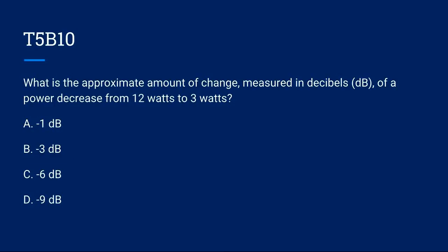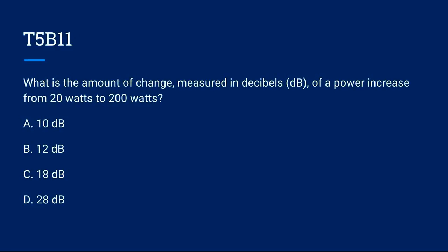T5B10, what is the approximate amount of change measured in decibels of a power decrease from 12 watts to 3 watts? A. Negative 1 decibel. B. Negative 3 decibel. C. Negative 6 decibel. Or D. Negative 9 decibel. The correct answer is C. Negative 6 decibel. T5B11, what is the amount of change measured in decibels of a power increase from 20 watts to 200 watts? A. 10 decibel. B. 12 decibel. C. 18 decibel. Or D. 28 decibel. The correct answer is A. 10 decibel.